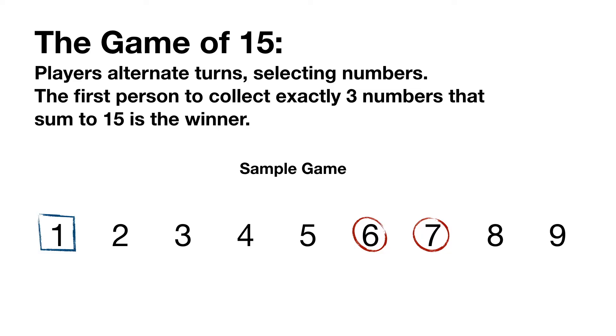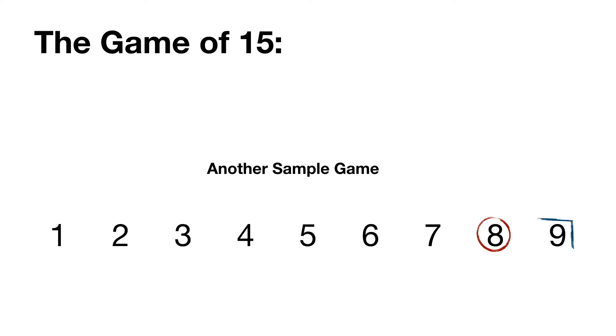For example, in this game between Team Red and Team Blue, we see that blue wins by finding three numbers: 1, 5, and 9, that sum to 15. In this next sample game,